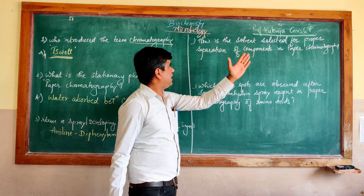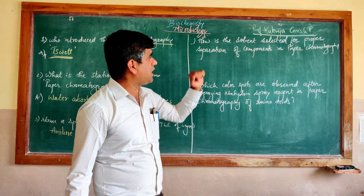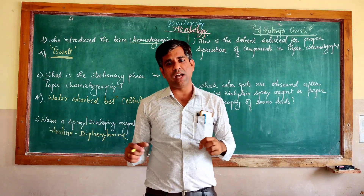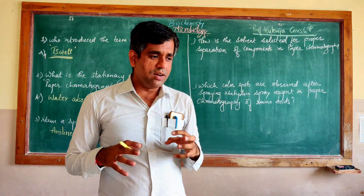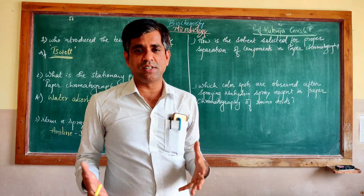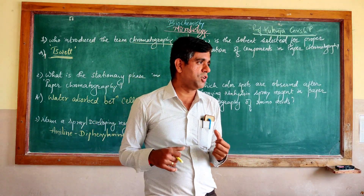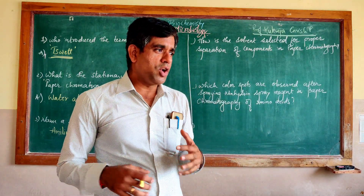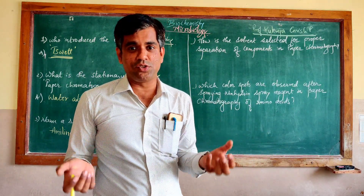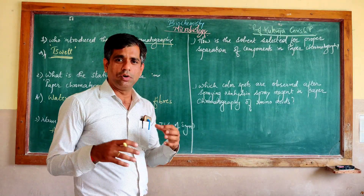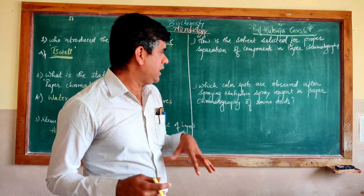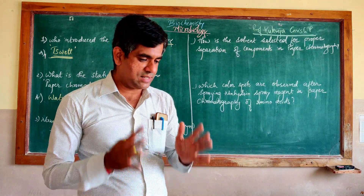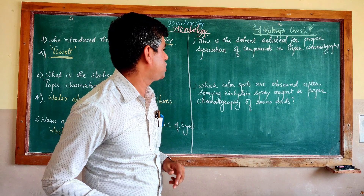How is the solvent selected for proper separation of components in paper chromatography? We have different solvent systems. One of the most common for amino acids is 4:1:5 butanol, acetic acid and water. There are many such recipes for making these solvents. How they are decided is empirical — it is trial and error, and then you come to a consensus that this solvent will give proper separation.